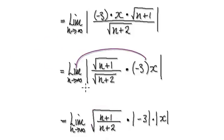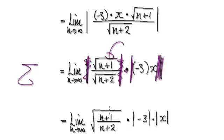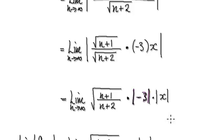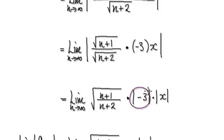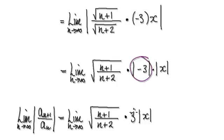Here you can visualize this as absolute of this times absolute of this. But the thing is, n is always positive, so the absolute has no effect on something that's always positive — you can ignore the absolutes there. And then this bit here you can visualize as the absolute of negative 3 times the absolute of x. The absolute of negative 3 is just positive 3, so this will then become this.